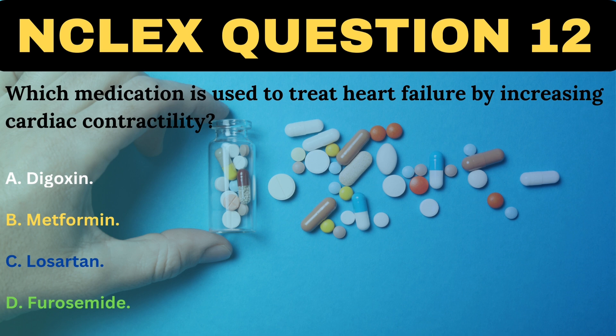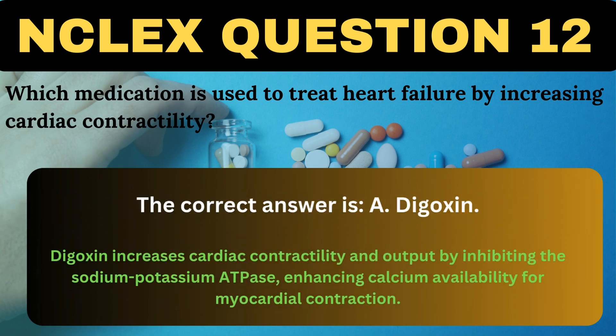Which medication is used to treat heart failure by increasing cardiac contractility? A. Digoxin. B. Metformin. C. Losartan. D. Furosemide. The correct answer is A, Digoxin. Digoxin increases cardiac contractility and output by inhibiting the sodium-potassium ATPase, enhancing calcium availability for myocardial contraction.